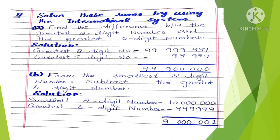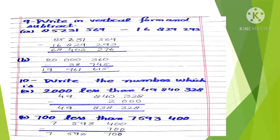Subtract the greatest six-digit number from the smallest eight-digit number. The smallest eight-digit number is 1 followed by seven zeros, and the greatest six-digit number is nine repeated six times. Written in vertical column and subtracted, the answer is 9,000,007.